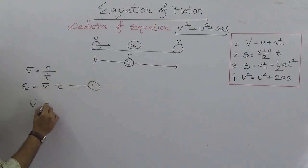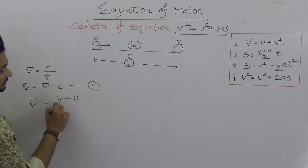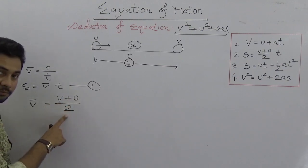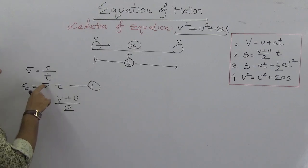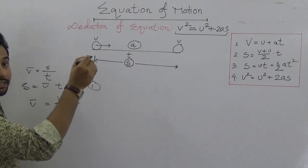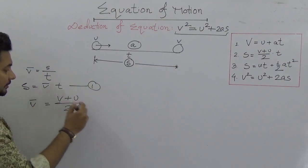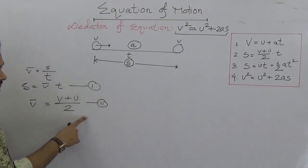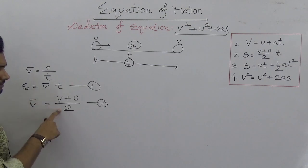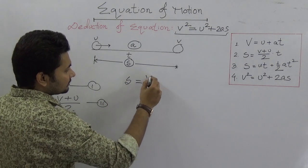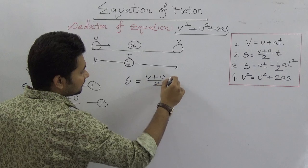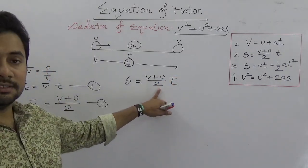Mathematically, this v̄ = (v + u)/2, because it's a very simple average. This bar sign expresses that this is the average velocity. So if we add this v̄ here, we will find (v + u)/2 × t. This is the third equation.